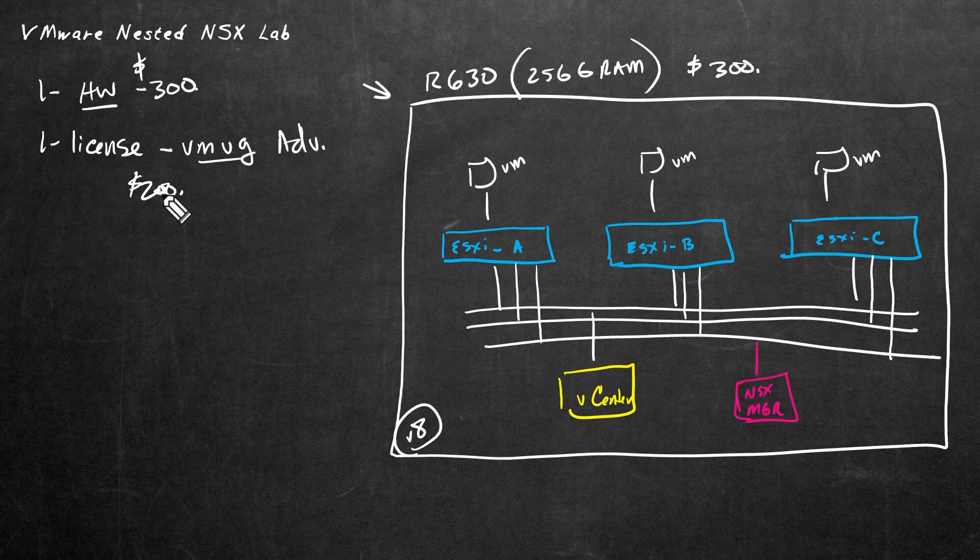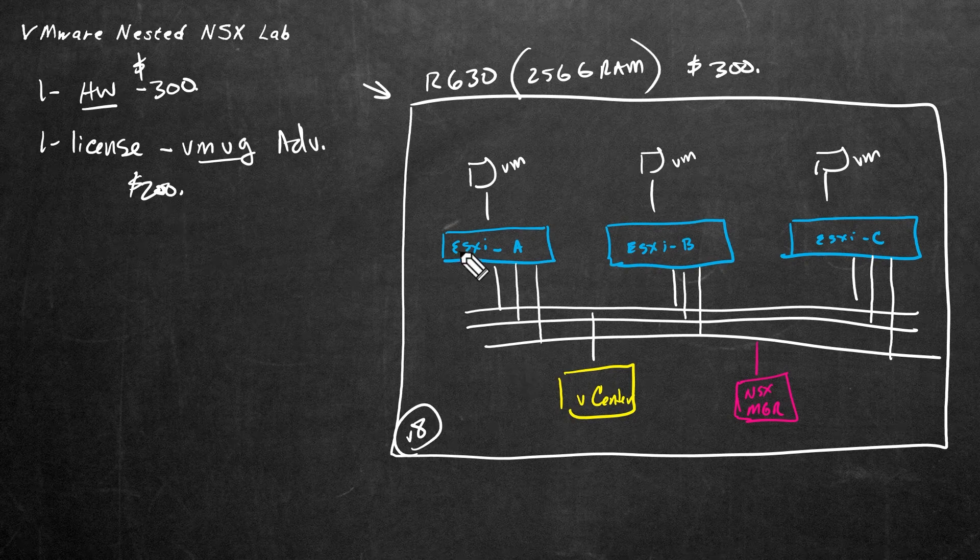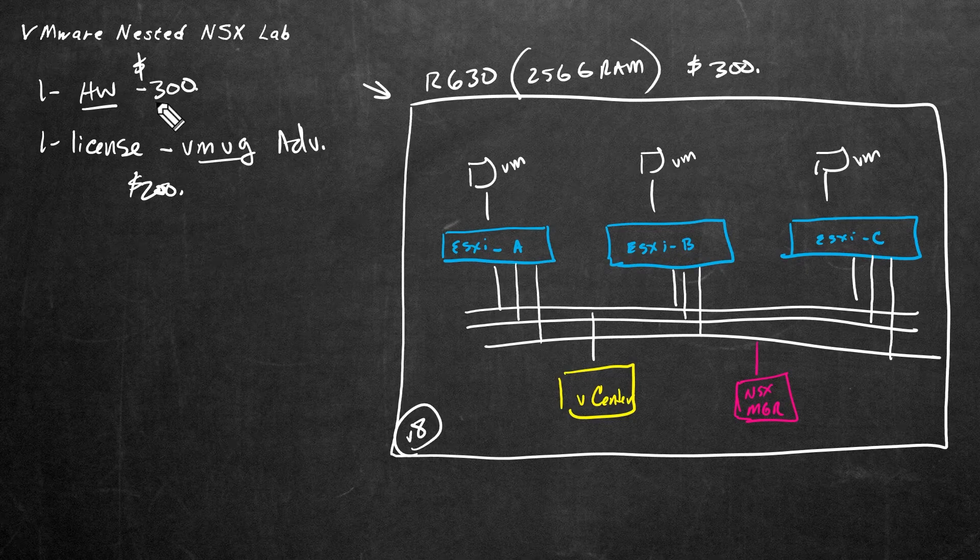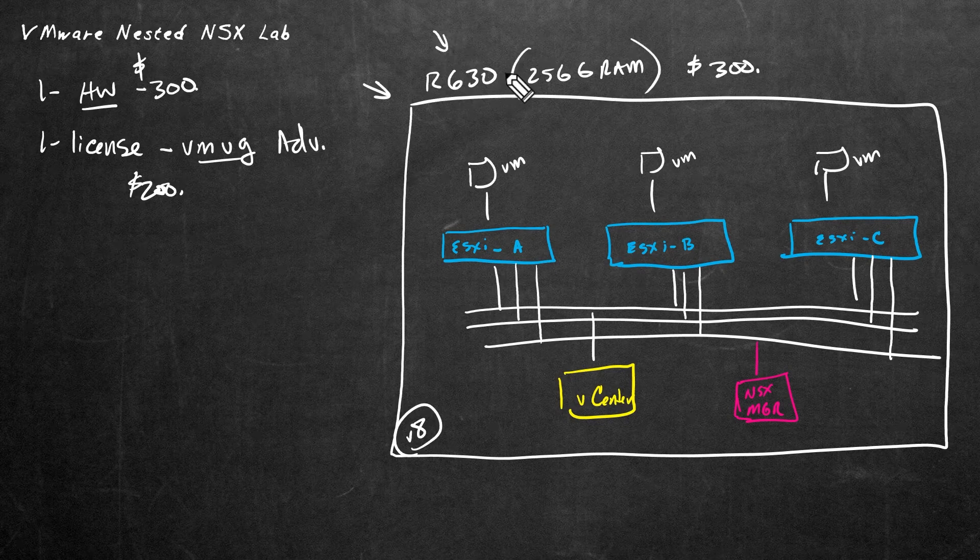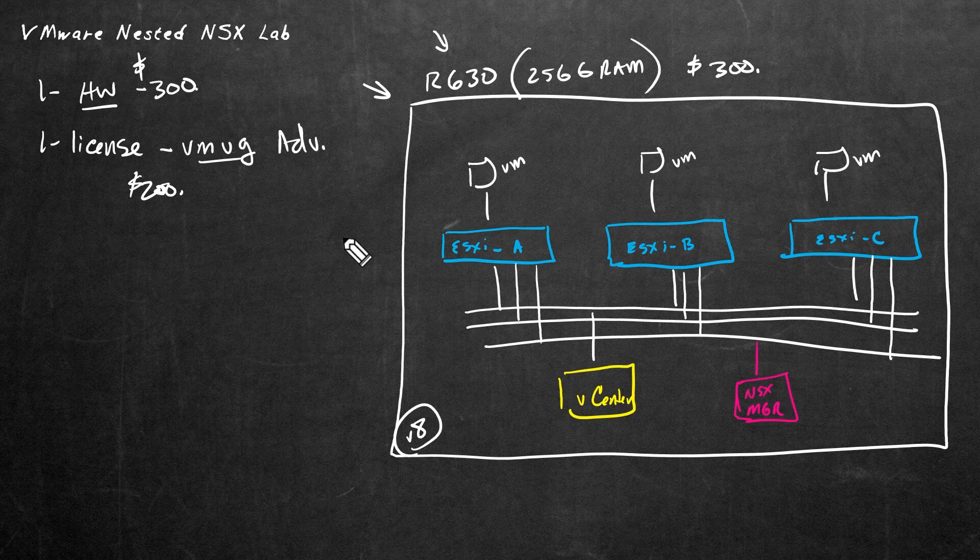So that way, when you build a lab environment, you can have licensing legally through the VMUG Advantage program. And the total cost for the membership will just be $200 a year. And if you don't need a lab for longer than a year, it'll just be the $200, and you'll have the eval licenses available to you for up to a year. So the end result that we're looking for is a lab environment that we can run on one physical server using the licenses from VMUG Advantage. And that's what this series is going to walk you through.